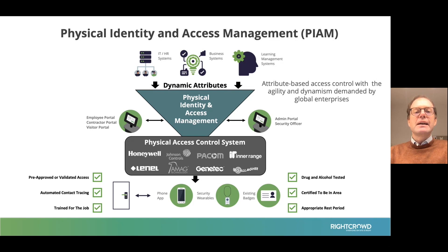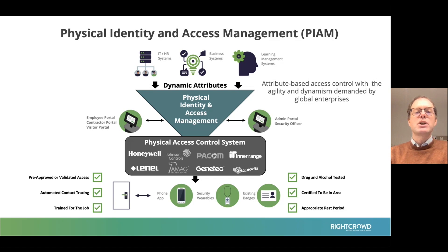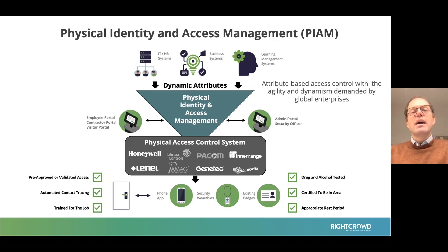A physical identity and access management system integrates with your physical access control system — we call this the system that sits southbound of the PIAM layer. That same PIAM system also integrates with and pulls information from other systems in your organization, more specifically people-related systems. Think of Active Directory, an HR system like Workday, and enterprise IT systems that contain information valuable and important for good and proper access control.